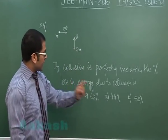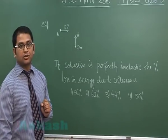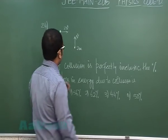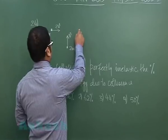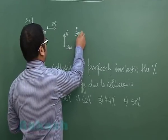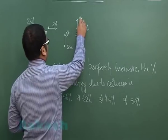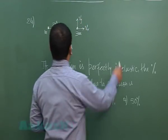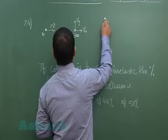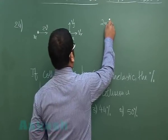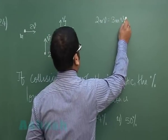We need to calculate the percentage loss in energy due to collision. After they stick, they would become a combined mass 3m having speed vx and vy. Owing to momentum conservation, I can write 2mv equals 3mvx. In other words, vx is 2v by 3, that's the x-component speed.